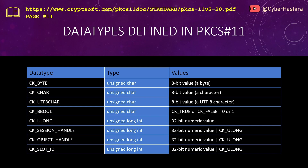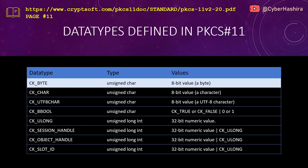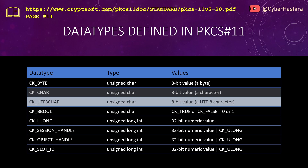Most PKCS11 data types are either unsigned character or unsigned long integer. An 8-bit value is a byte, which can be of type character, boolean, or UTF8 character. There is also a 32-bit numeric data type for storing numeric data. CK_BYTE is used for storing byte data such as plain data to sign or encrypt, a signature, encrypted data, decrypted data, a digest, or a key.